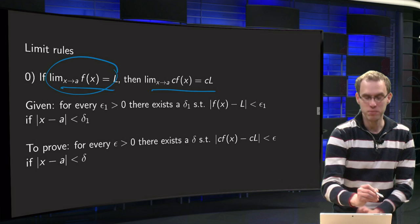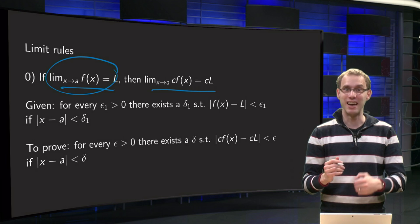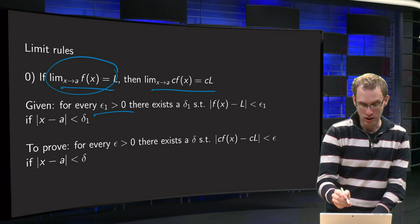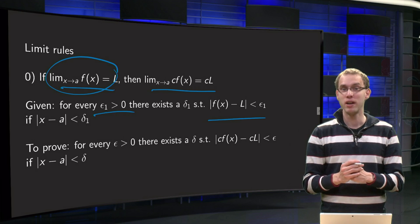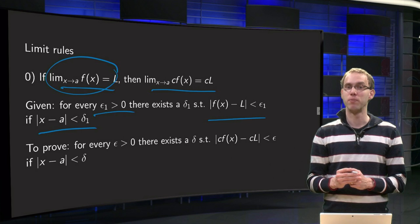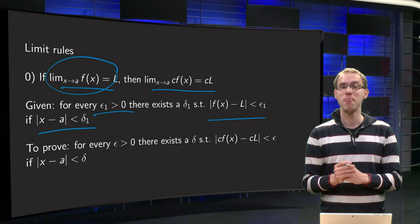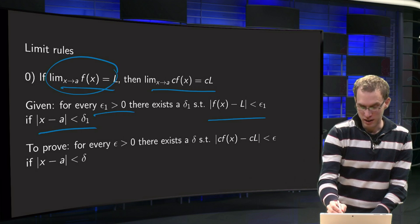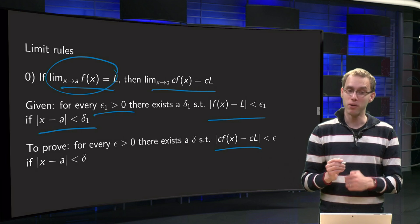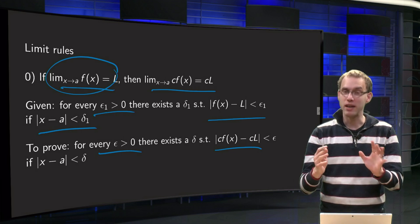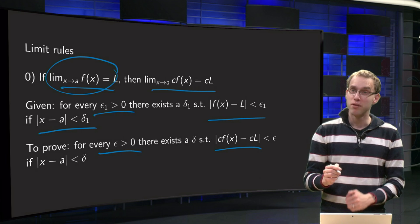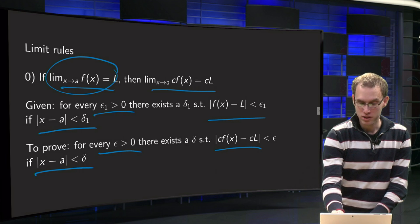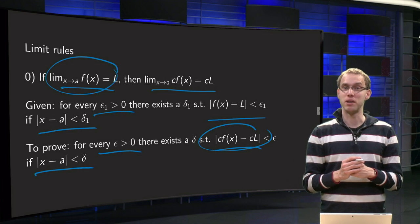What does this first statement mean — what is given? We are given that for any ε₁ greater than 0, I can get f(x) as close to L as I like, so I can get |f(x) − L| smaller than ε₁, provided I take x close enough to a. So that is what is given. What do we want to prove? That I can get c·f arbitrarily close to c·L — so for every ε > 0, I can find a δ such that, provided |x − a| < δ, we have |c·f − c·L| < ε. That is what we need to prove.